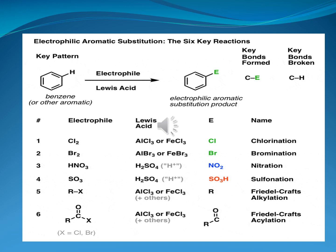When we take bromine as an electrophile in the presence of a Lewis acid such as aluminum tribromide or FeBr3, bromine behaves as the electrophile — this reaction is generally known as bromination. When we take nitric acid as an electrophile in the presence of a Lewis acid such as protonated sulfuric acid, and the nitronium ion behaves as the electrophile, this reaction is represented as nitration. When we take sulfur trioxide as an electrophile in the presence of protonated sulfuric acid, and protonated sulfur trioxide behaves as the electrophile, this reaction corresponds to sulfonation.